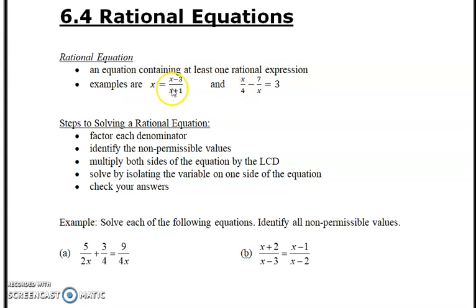So what we have here are some examples like x equals (x-3)/(x+1) or x/4 - 7/x = 3. First thing in the steps of solving: factor each denominator, identify any non-permissible values, multiply both sides of the equation by the least common denominator.